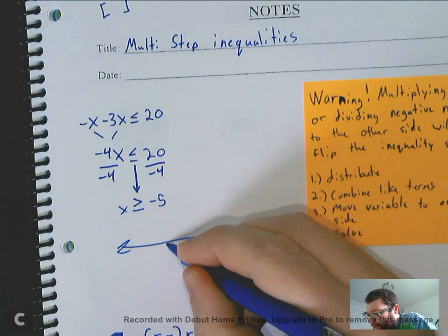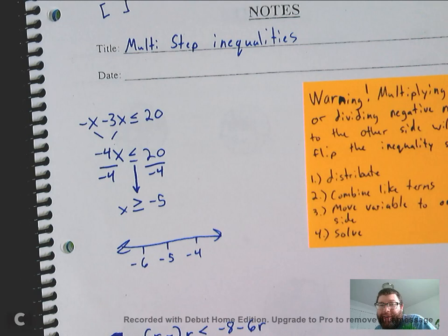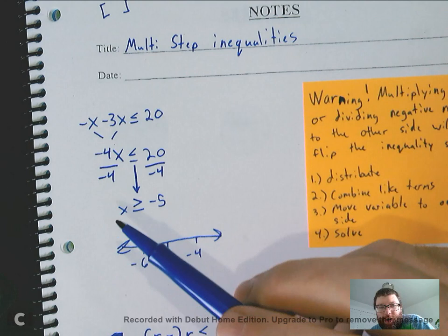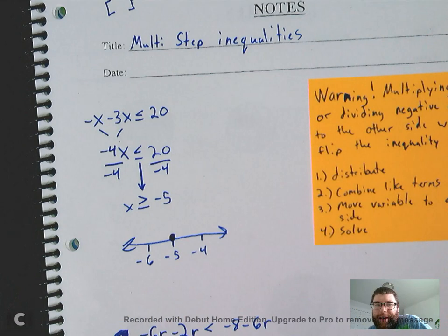Now, I have to graph it. So, I do my number line. And depending on what your teacher usually wanted, I always told my students just do the number in question and the number before it and the number after it. So, I did three numbers. Some just said one number. Whatever works for you. And then we put our circle. This has the equal to, which means it's going to be a closed circle. So, I put a closed circle at negative 5.